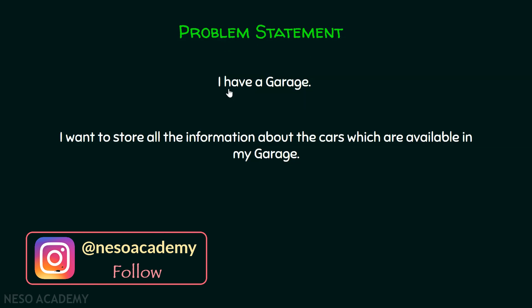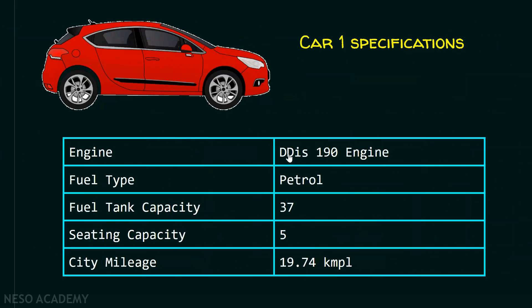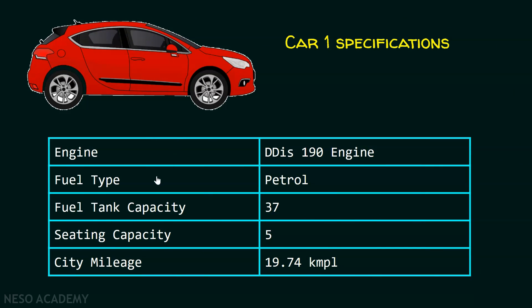Here is the problem statement. I have a garage and I want to store all the information about the cars which are currently available in my garage. Suppose I have this car and here are the specifications: the engine is DDIS 190, fuel type is petrol, fuel tank capacity is 37, sitting capacity is 5, and city mileage is 19.74 kilometers per liter. I want to store all this information somewhere.